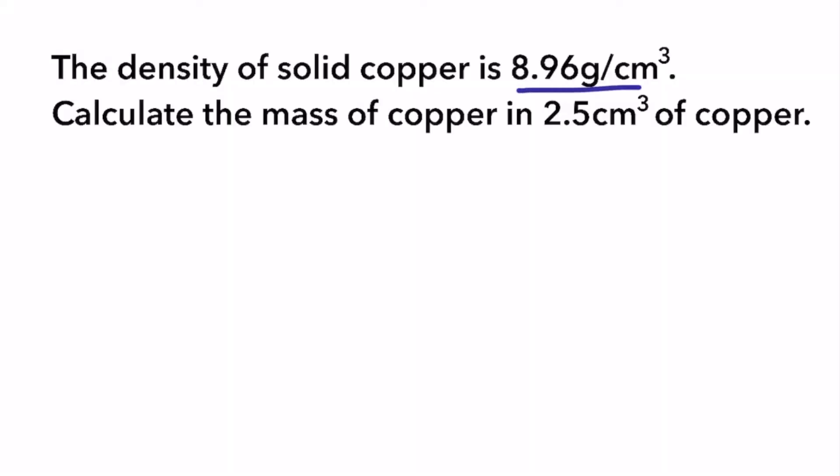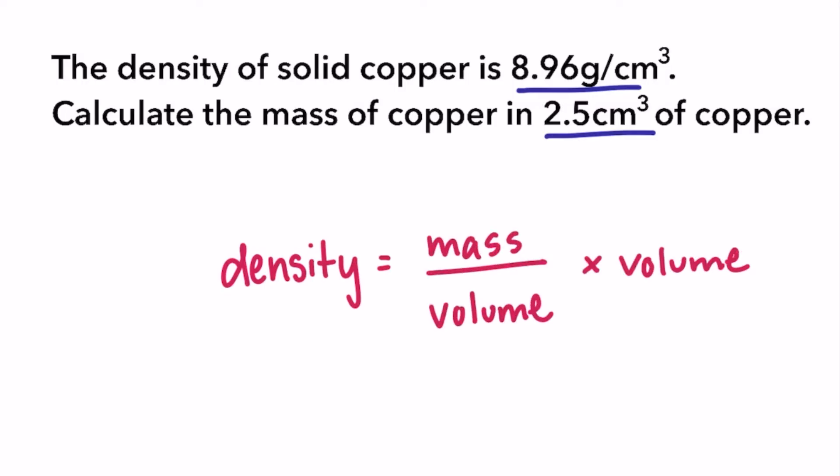The density of solid copper is 8.96 grams per cubic centimeter. Calculate the mass of copper in 2.5 cubic centimeters of copper. To solve for mass, first we need to rearrange the density formula to have mass by itself on one side of the equal sign. To do this, we simply multiply both sides by volume. So mass is equal to density times volume.